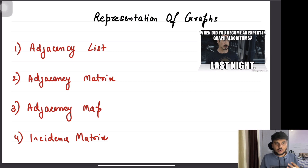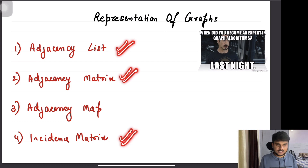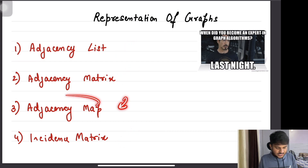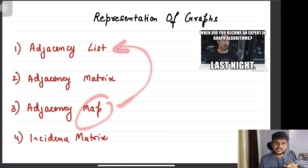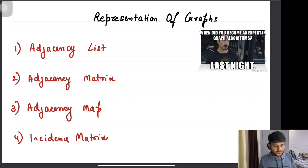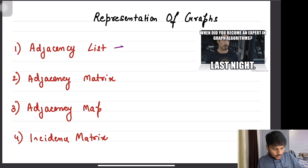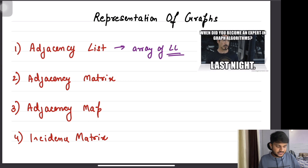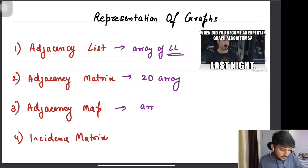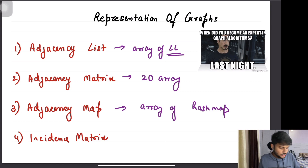If you read a lot about graph theory, you will find some representations of graphs like adjacency list, adjacency matrix, as well as incidence matrix. I have listed one more here — adjacency map — we are going to discuss about it; it's nothing but an optimization over adjacency list. In a nutshell: an adjacency list represents the graph as an array of linked lists, an adjacency matrix as a 2D array, an adjacency map as an array of hash maps, and an incidence matrix is also a 2D array.